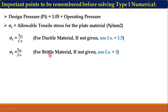For brittle material, if fs is not given, assume fs = 3. For ductile material, if fs is not given, assume fs = 1.5. Sometimes fs will be given in the numerical, and sometimes it will not be given.